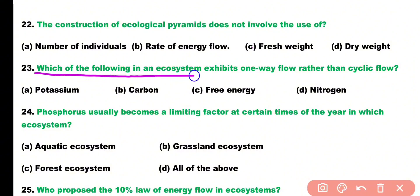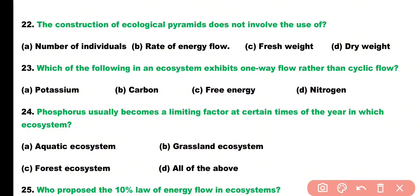Question number twenty-three. Which of the following in an ecosystem exhibits one-way flow rather than cyclic flow? Options: potassium, carbon, free energy, or nitrogen? Correct answer is option C. The flow of free energy in an ecosystem is always unidirectional — one-way flow rather than cyclic flow.